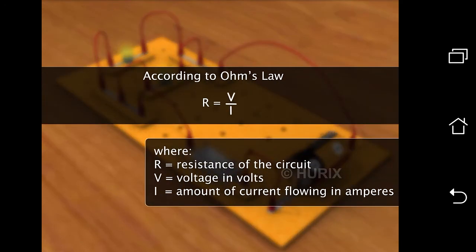According to Ohm's law, the resistance of a circuit is the ratio between the voltage of that circuit and the current that flows through it.